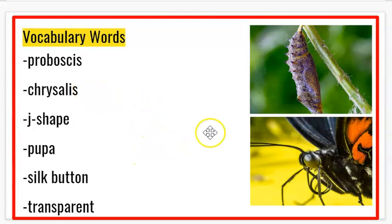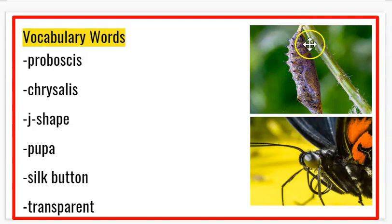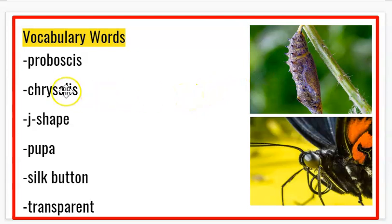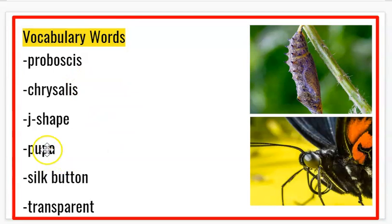Chrysalis — we've talked about that. It is the hard outer shell that a caterpillar forms in order for it to go through the metamorphosis process. Chrysalis and pupae are used interchangeably, so pupae is the chrysalis stage and the chrysalis stage is the pupae.